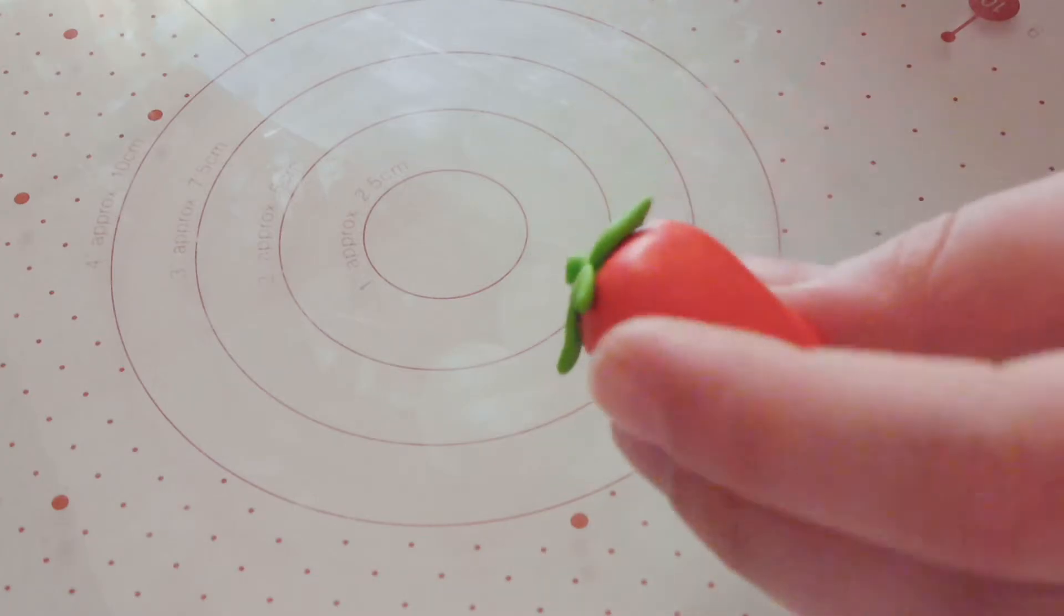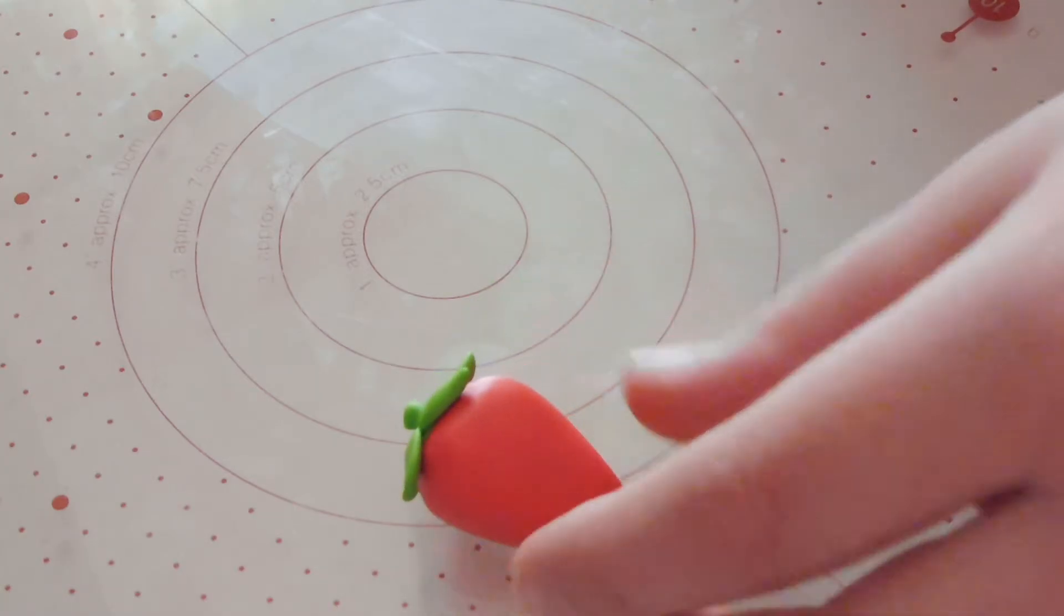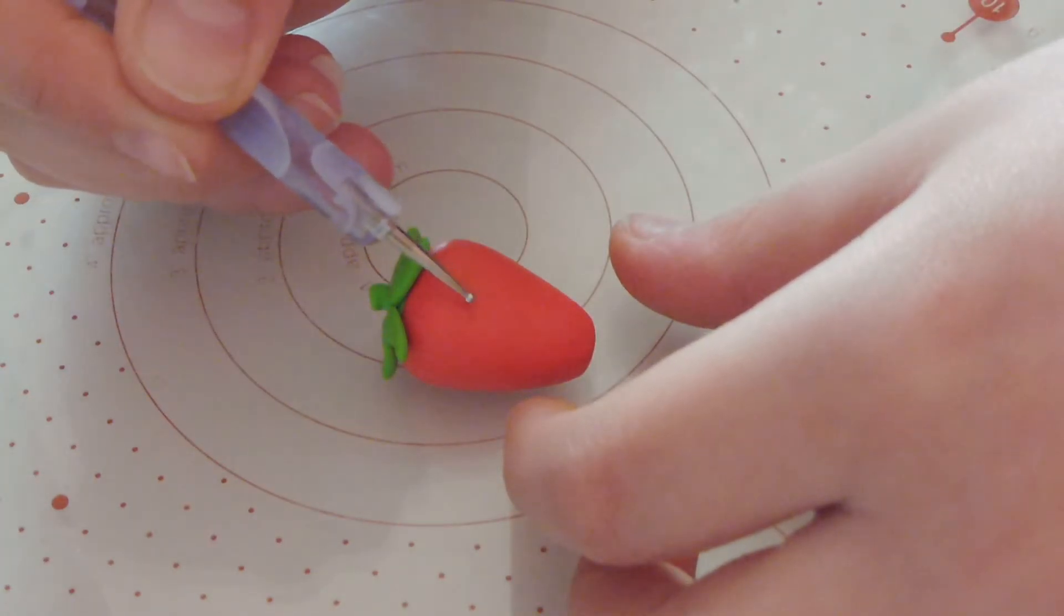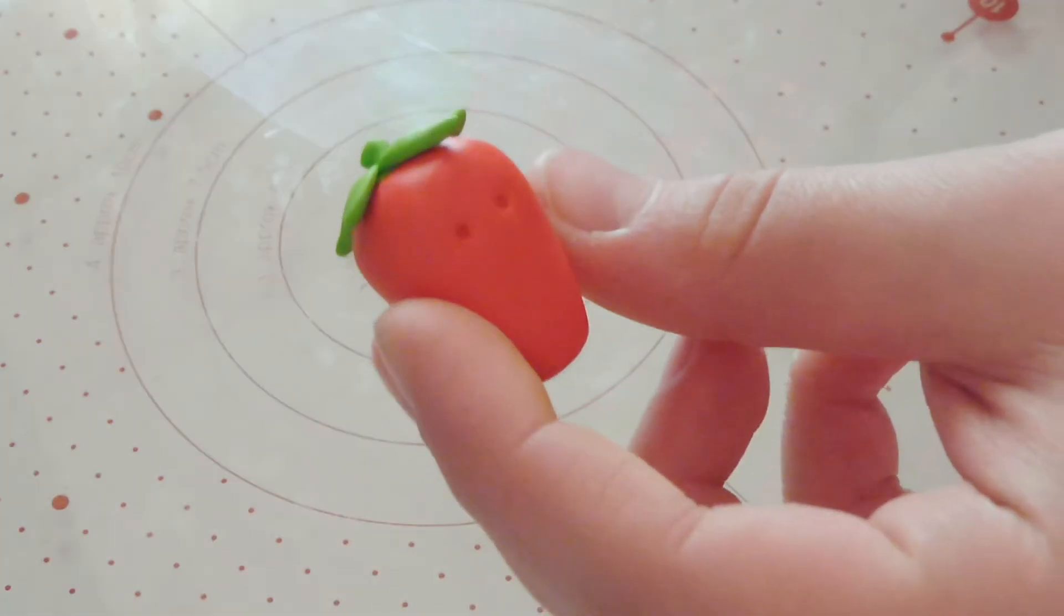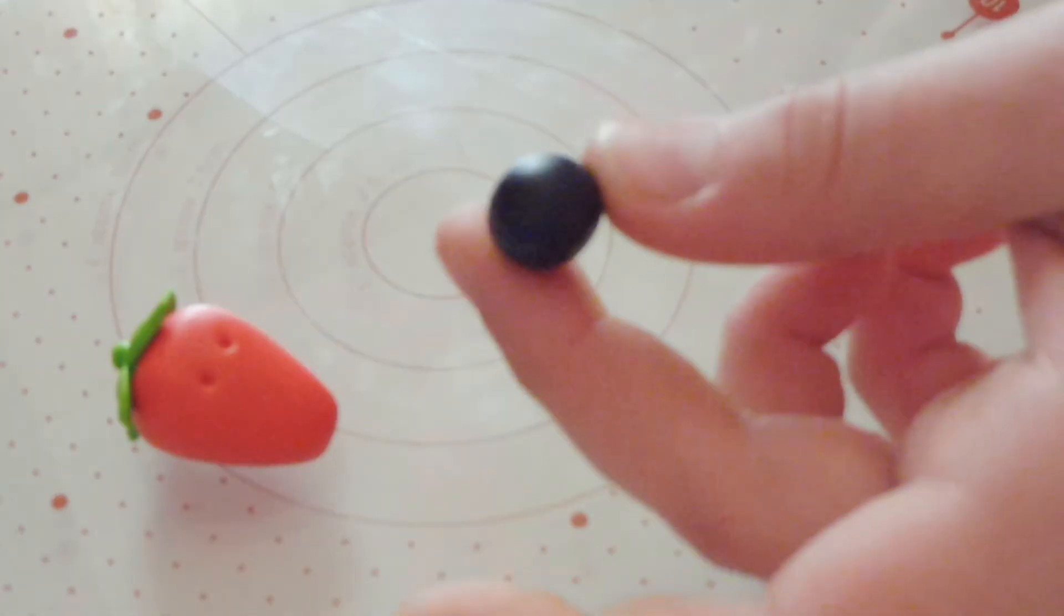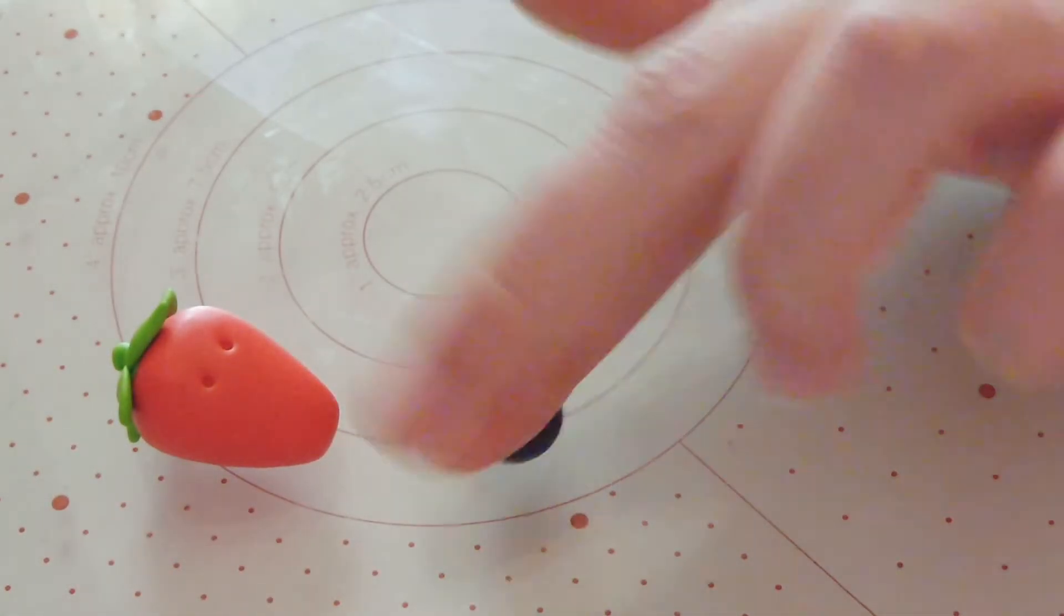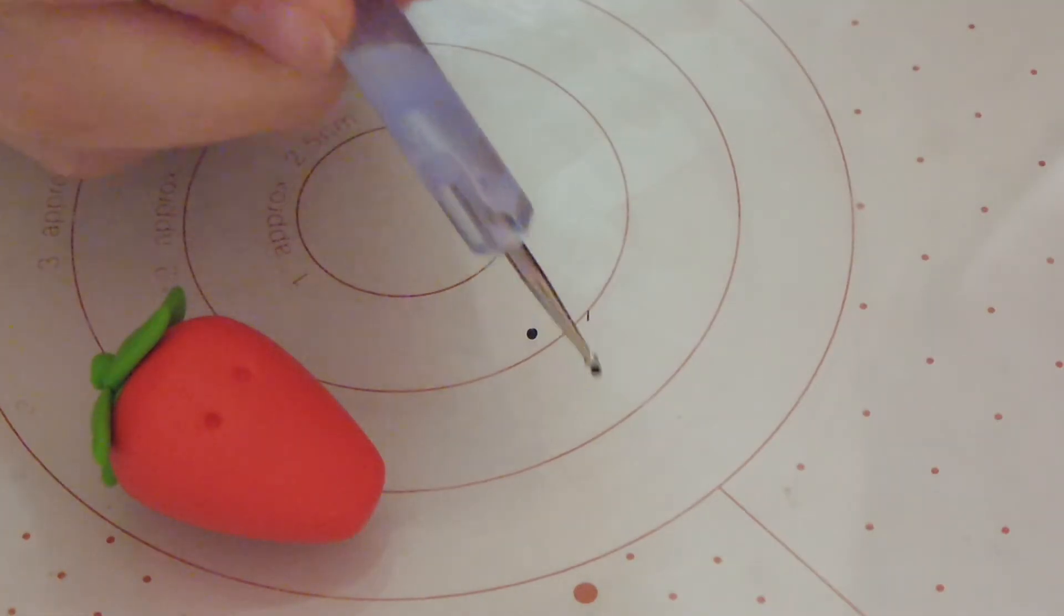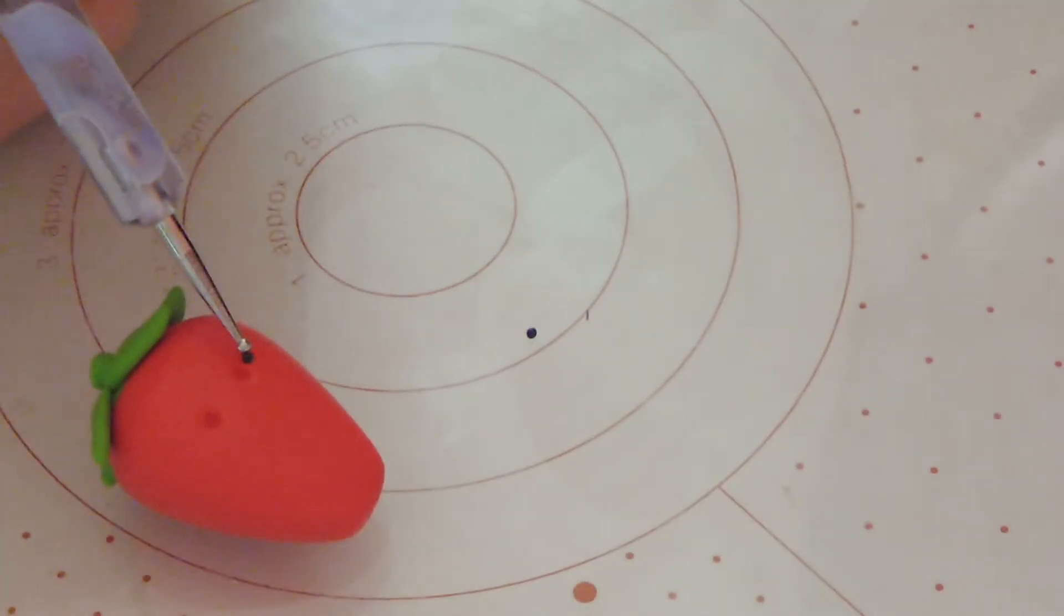Our basic strawberry is done and it's now time to give it a little bit more personality. So we're going to take a ball tool and just create the indents as we always do for the eyes. And rolling out our clay, we're going to make the eyes and mouth. And again, as per usual, we're going to pop them into place and push down with our ball tool to secure them.